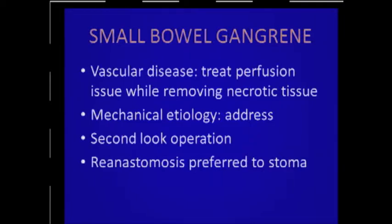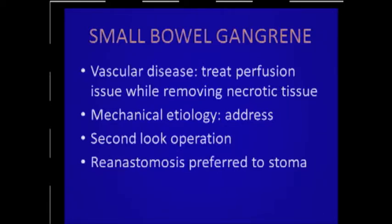If it's a mechanical etiology like an internal hernia or volvulus, you obviously have to address that and resect the bowel. Most of the time you'll have some resected bowel and some marginal compromised bowel you're not sure about, so you almost have to decide you're going to do a second-look operation. In the severely obese population, it's preferable to do a second look rather than trying to do an ostomy, because ostomies are difficult. You're better off putting the bowel back together the next day.